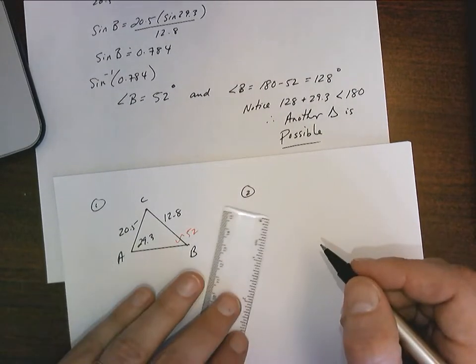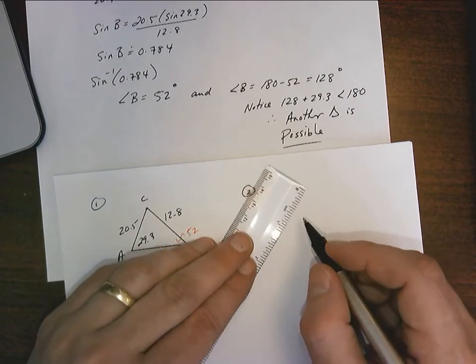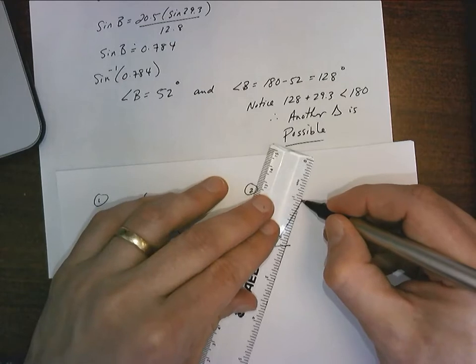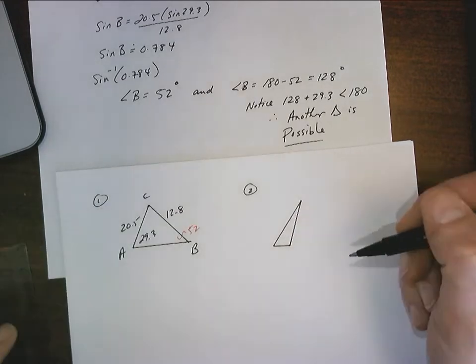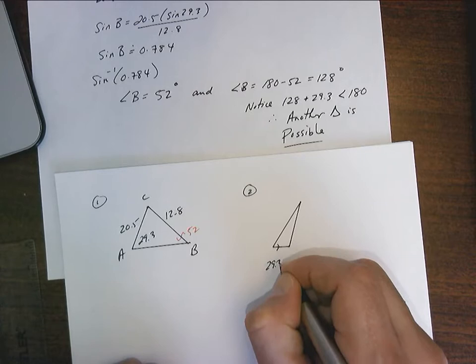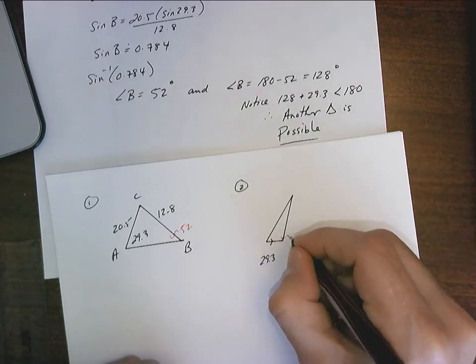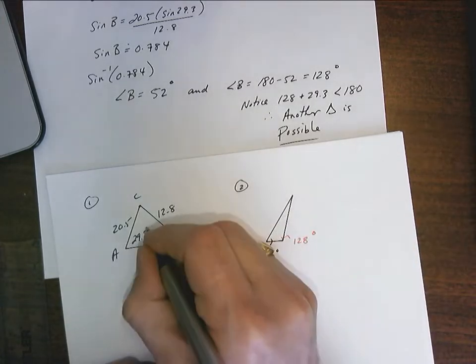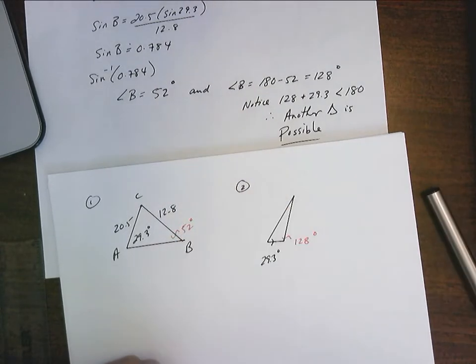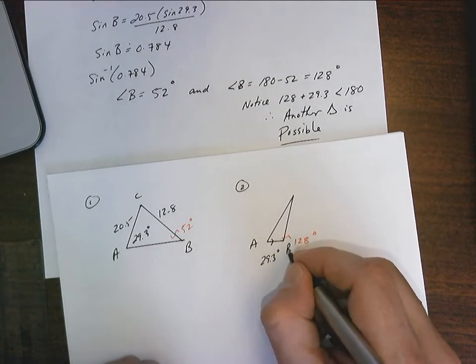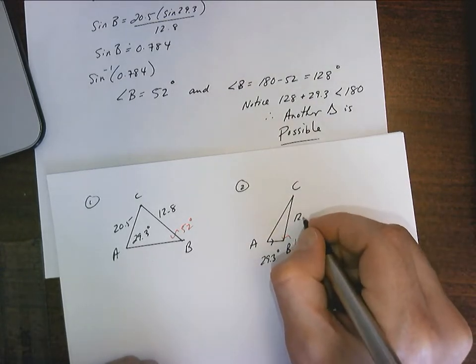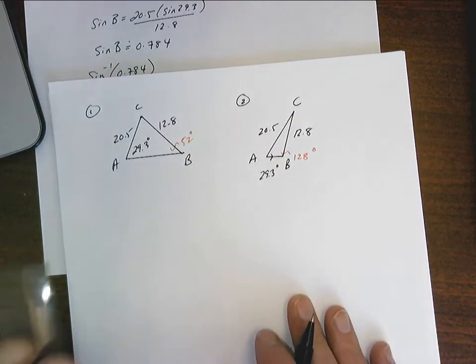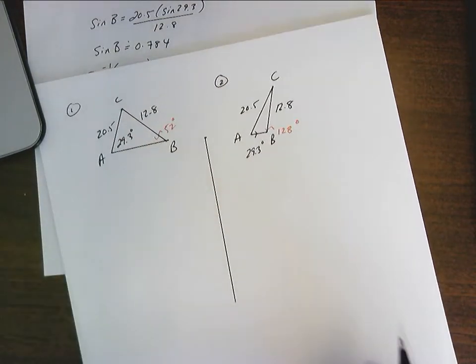What about triangle number 2? Well, triangle number 2 is going to look a little bit different. So how's it going to look? It's going to look like an obtuse triangle. This is going to be 29.3. This is going to be 128 degrees. Put some degree symbols in here. Make it look professional. Okay, so this is A, this is B, and this is C. I know that this stays at 12.8, doesn't change, and this stays at 20.5. So now you've got some discrepancies between these triangles.